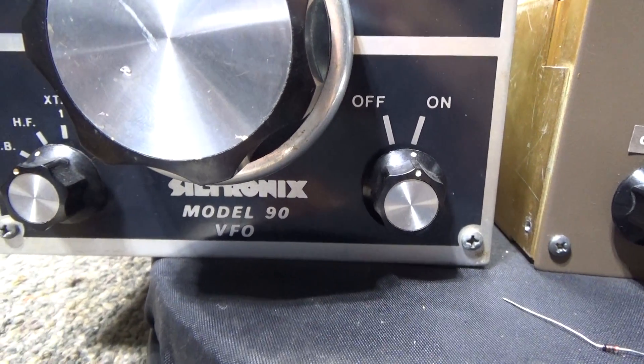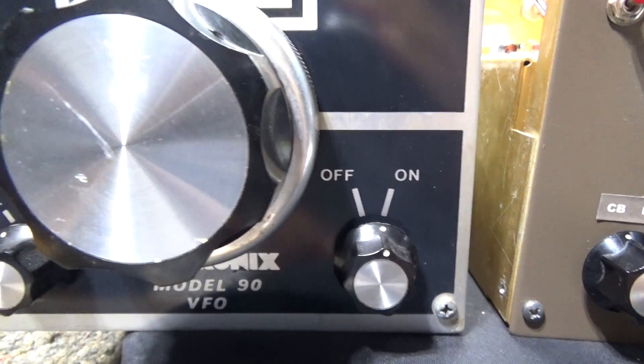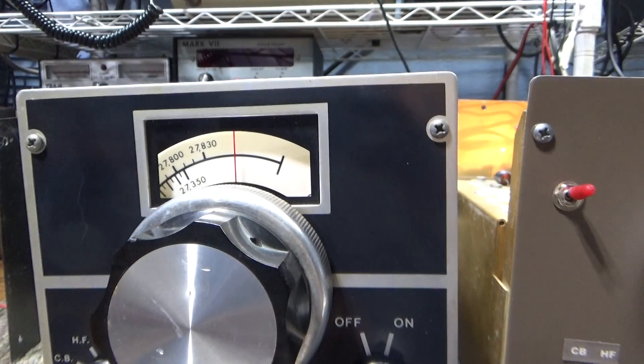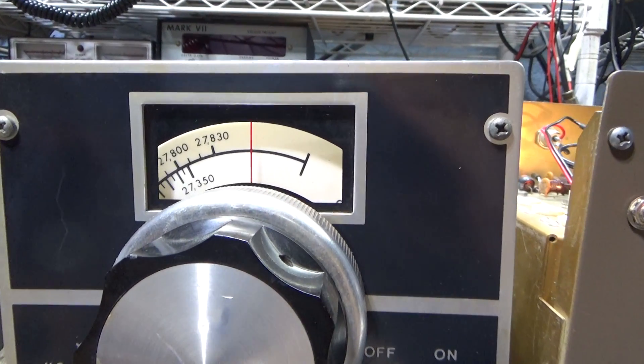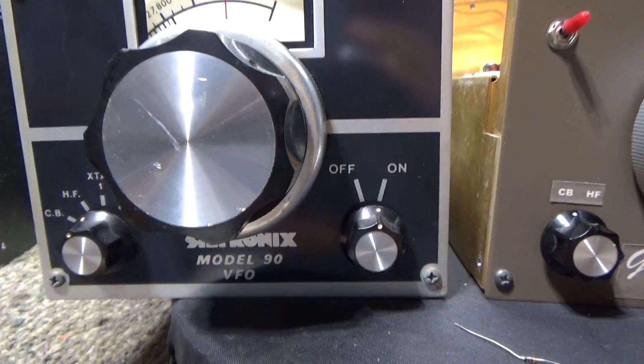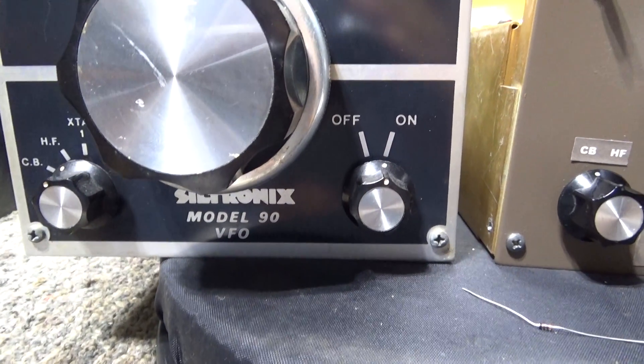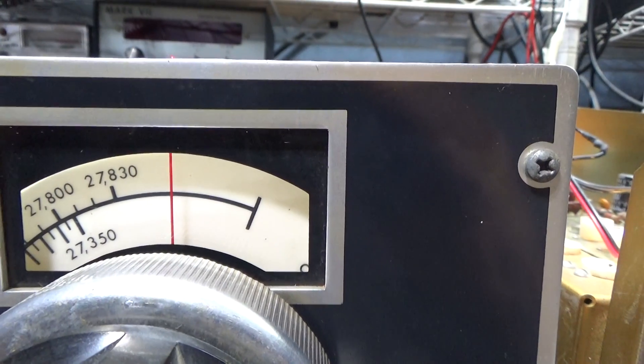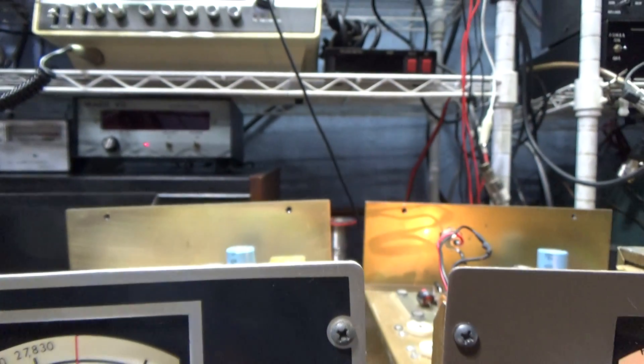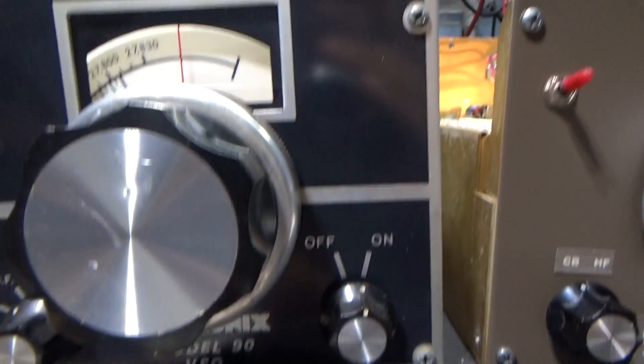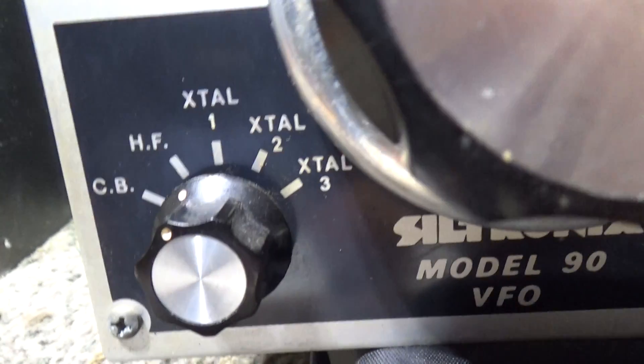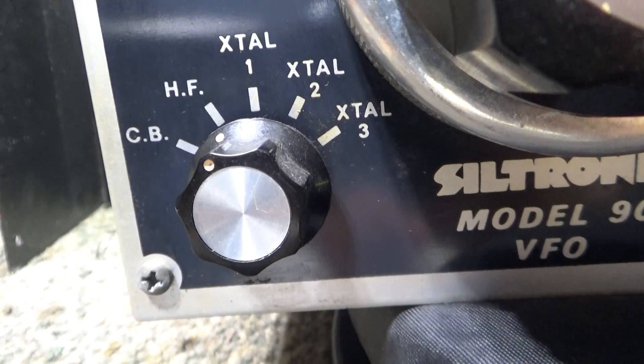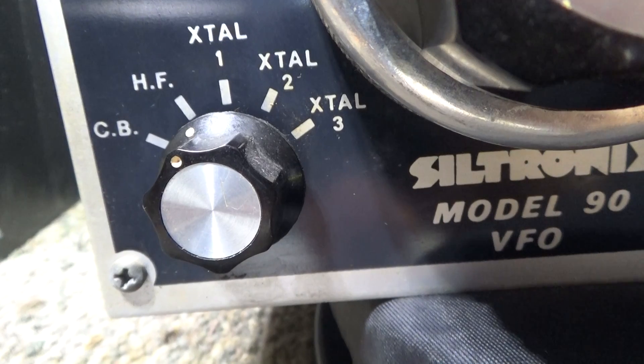It actually goes past that, up to about channel 90 even though it doesn't have markings on it. So basically the model 80 is four under to about channel 40, maybe 45, and then the model 90 with the upgraded frequency scale is up to about channel 90 with the dual scale. The other difference is the 80s don't have the XTAL position.